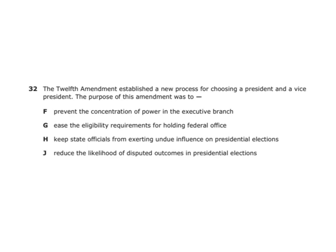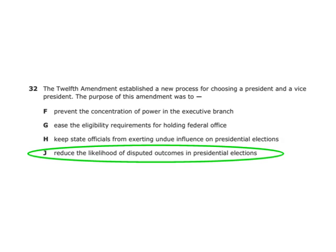The 12th Amendment established a new process for choosing a president and vice president. Its purpose was to reduce the likelihood of disputed outcomes in presidential elections. At one time, the person with the most votes became president and the second-most became vice president — very controversial. The 12th Amendment was established so we could decide president and vice president in a more orderly manner.